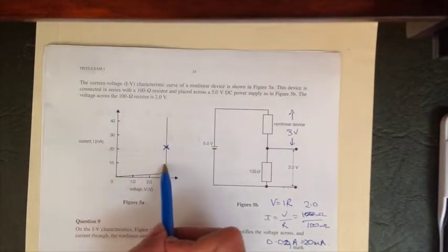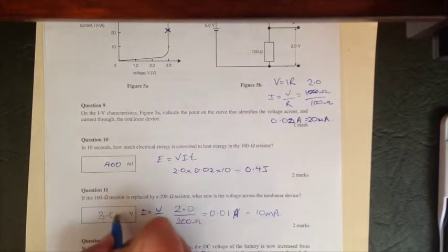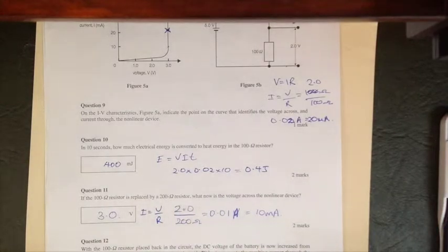We go back to our graph and we can see, yes, absolutely at 10 milliamps we are still using up 3 volts. So we know that we have 3 volts still being used up in that section there.